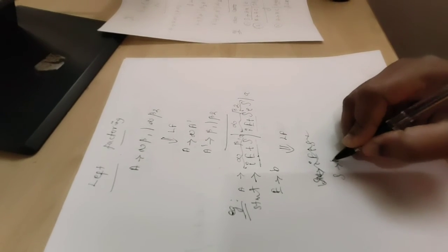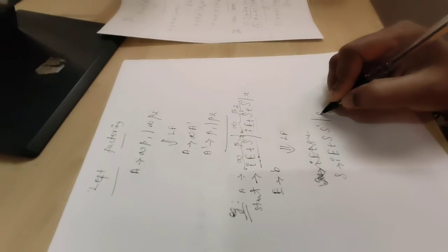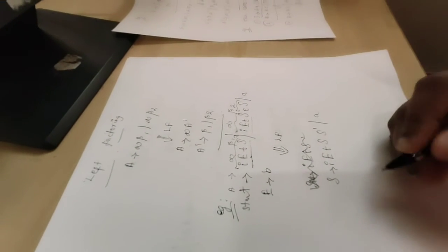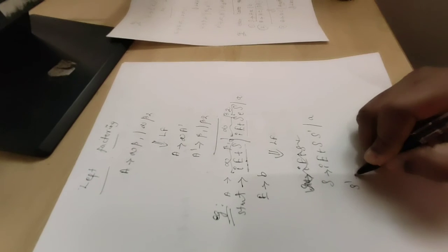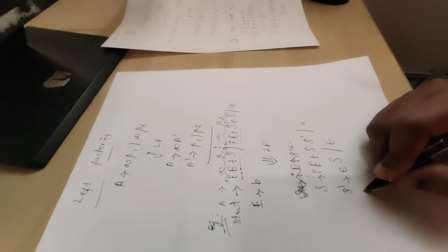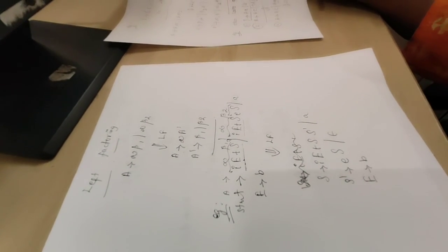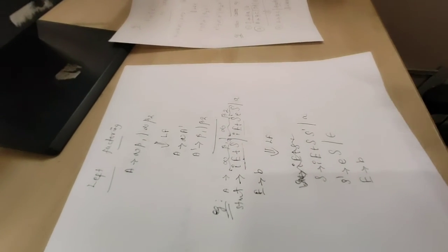S produces if expression then statement S dash or arithmetic expression A. S dash produces else statement or epsilon. Expression produces boolean expression. This is the way left factoring will be applied.